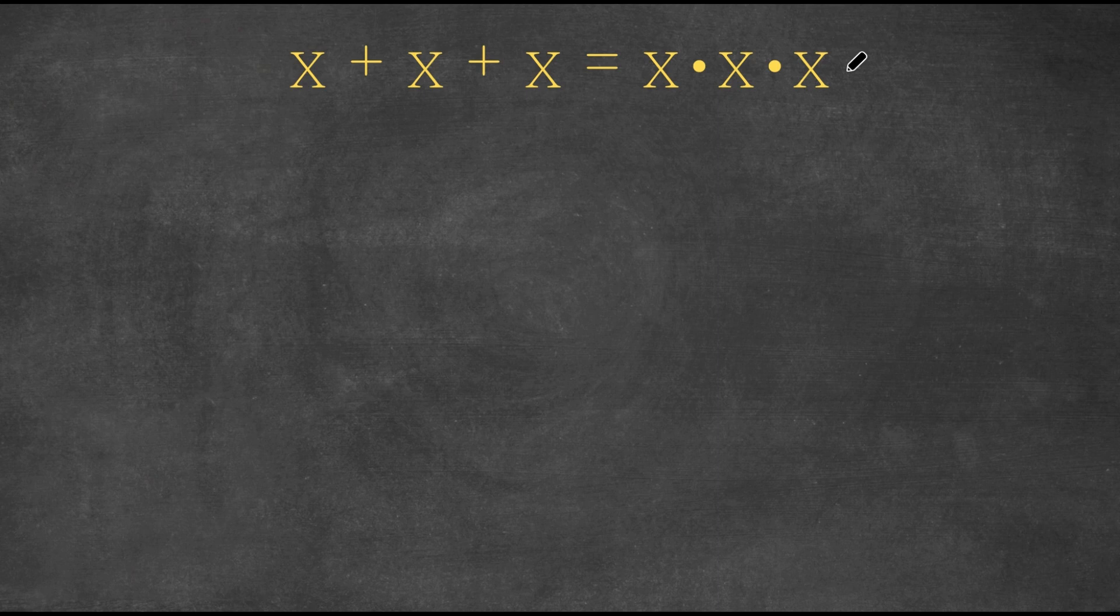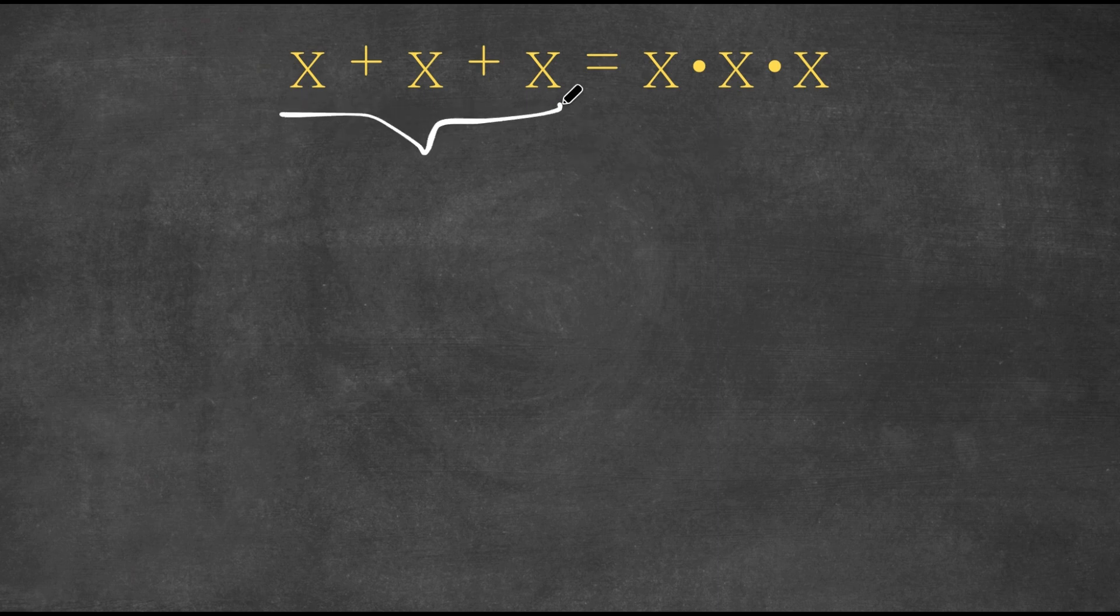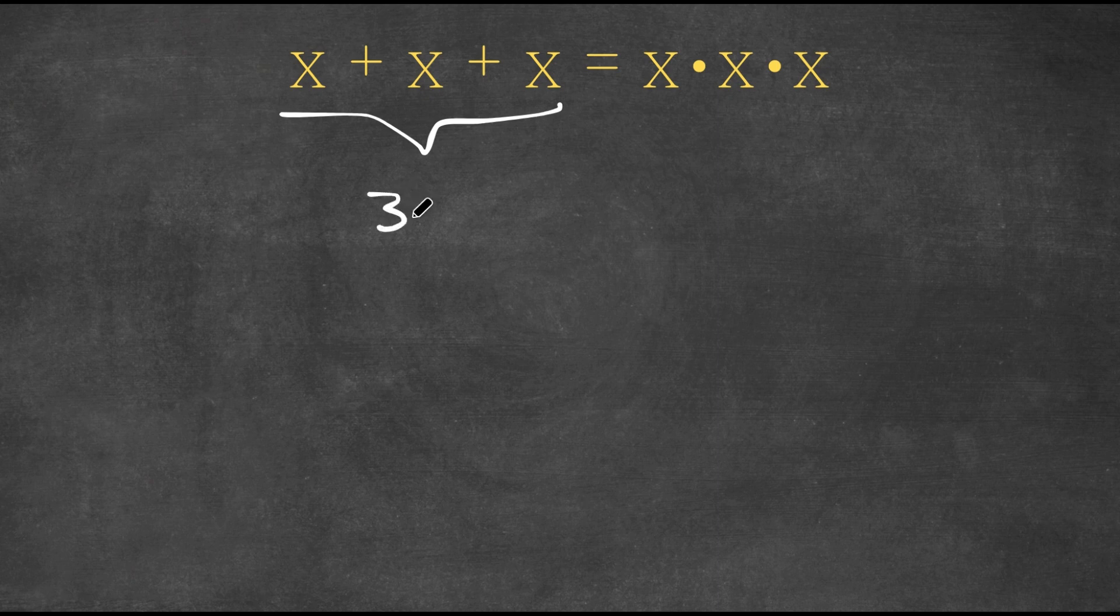Now what we're first going to do is we're going to simplify both sides. So let's first start by adding these three x's. x plus x, well that's 2x, and 2x plus x is 3x. So we have 3x.